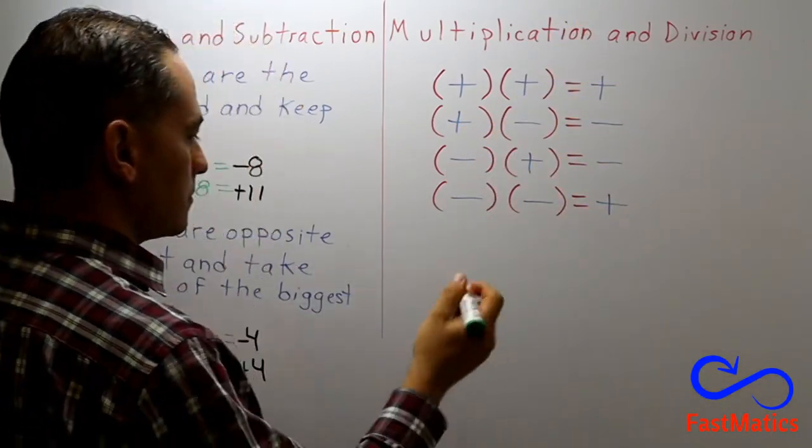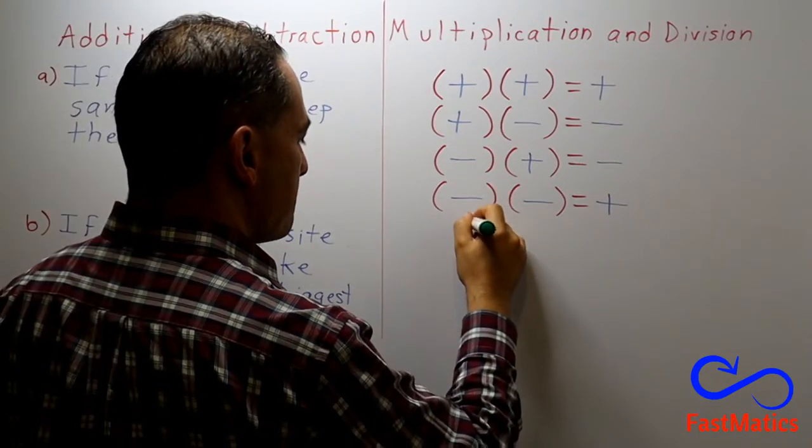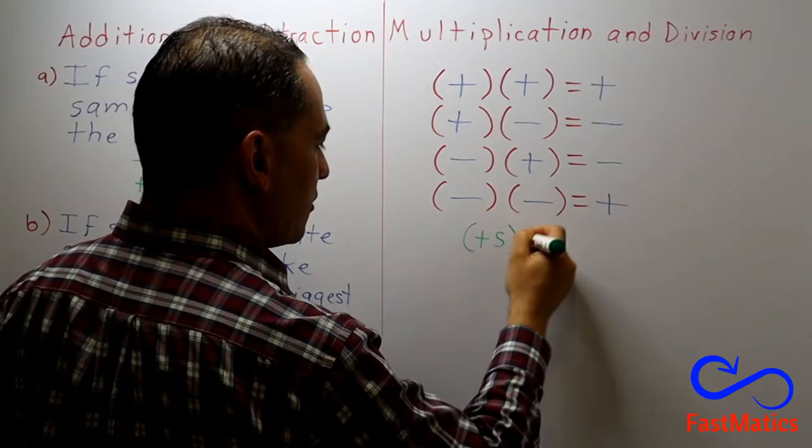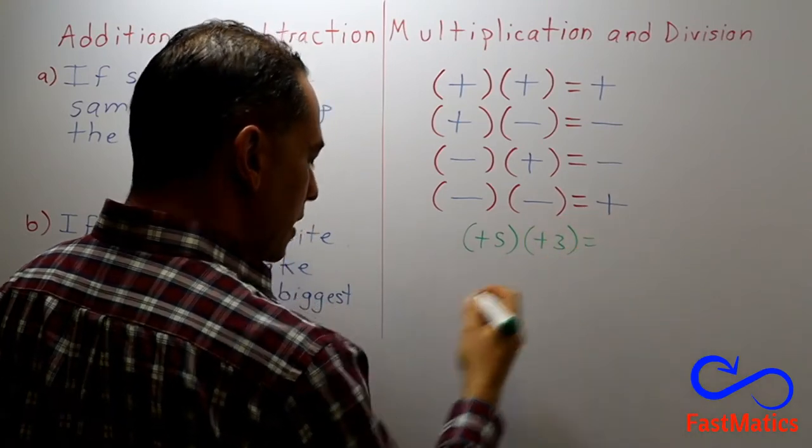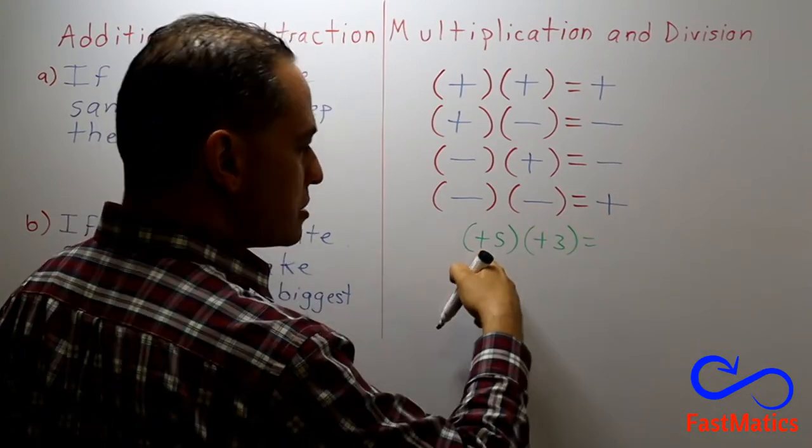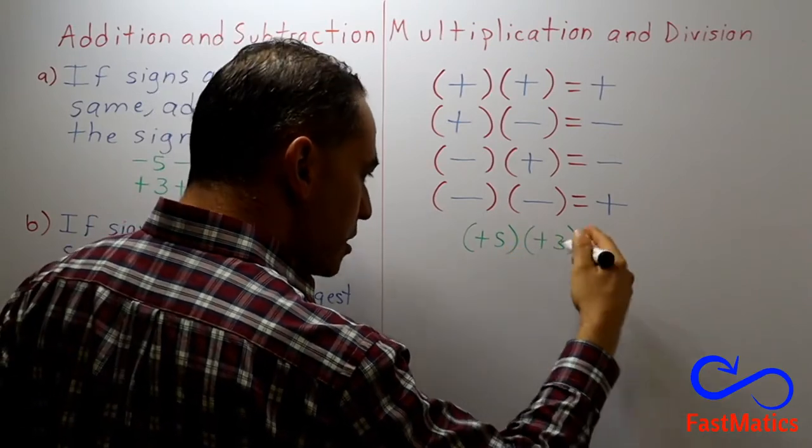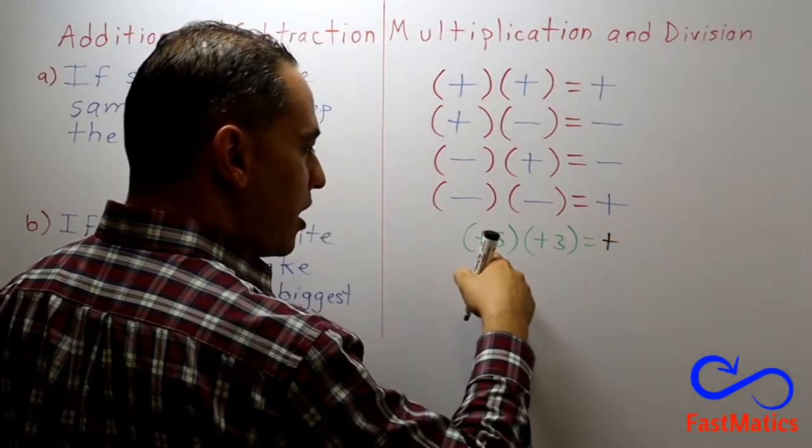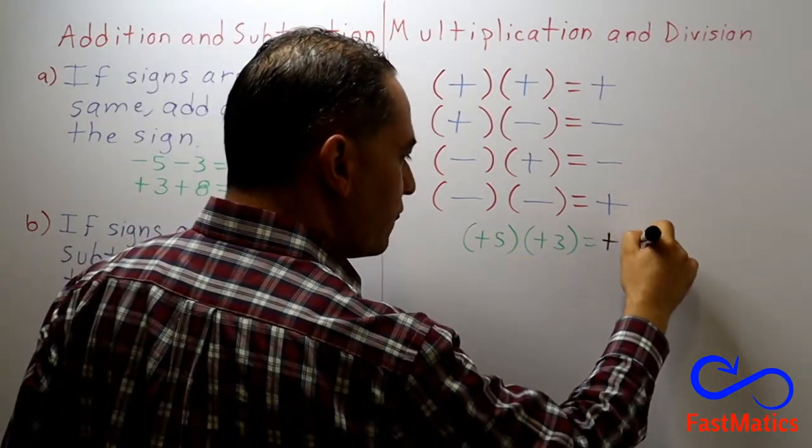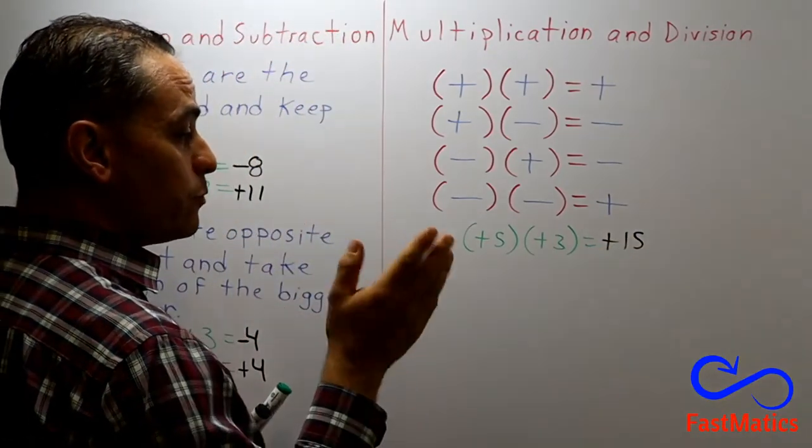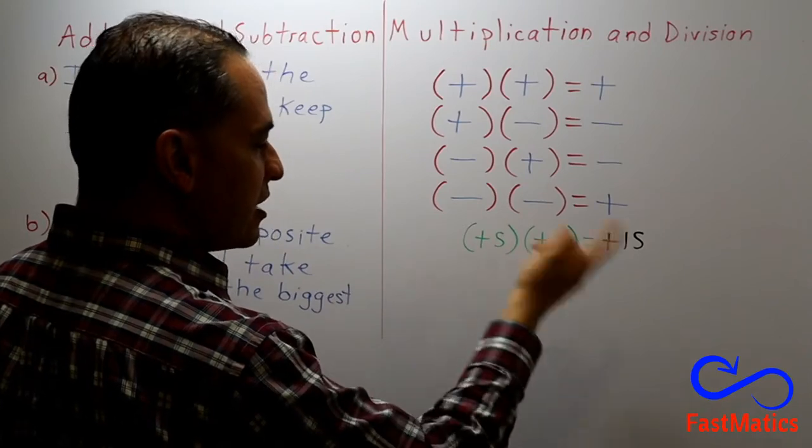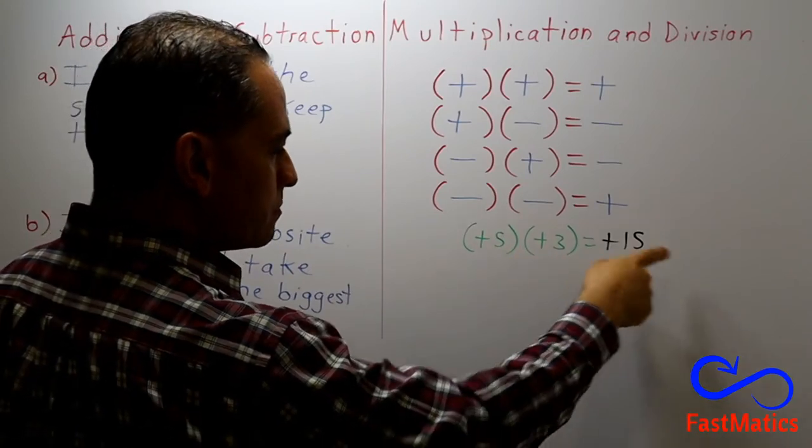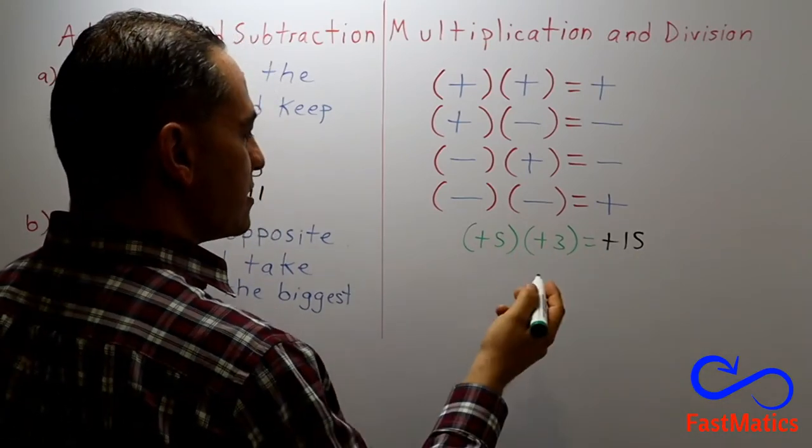For instance, plus five times three equals positive. It is very important to multiply first the signs and after that the numbers.